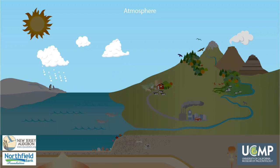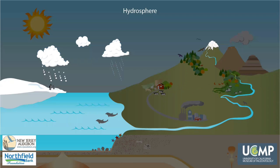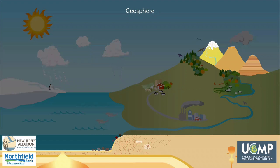First, let's look at the atmosphere — the layer of air around the Earth. The air we breathe and the clouds that bring us rain are all part of the atmosphere. Let's look at the hydrosphere, the parts of the Earth that have water as ice, liquid, and gas. Earth's oceans, rivers, lakes, and the water we drink are all part of the hydrosphere. The geosphere includes all of the land on continents and under oceans, and the rocks, both solid and liquid, beneath our feet.